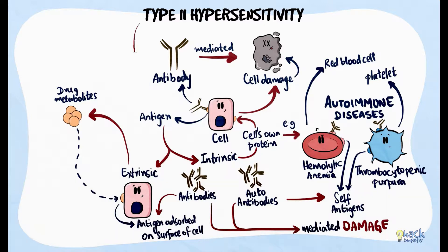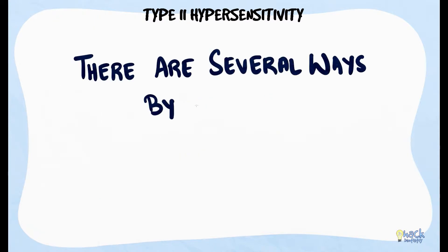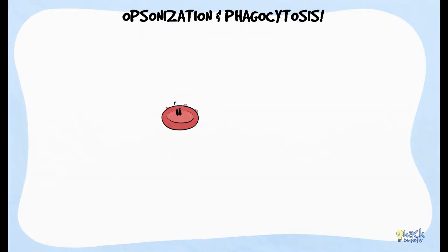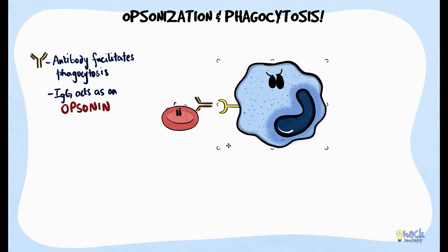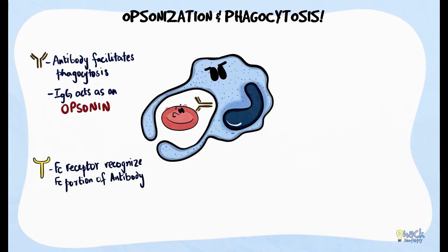Antibodies usually mediating type 2 hypersensitivity reactions are IgG antibodies and rarely IgM antibodies. There are several ways by which antibodies mediate cell damage. One common way is by facilitating phagocytosis. IgG antibodies, after attaching to the antigen, act as opsonins, facilitating phagocytosis of the cell. Phagocytes such as macrophages possess receptors called FC receptors, which recognize the FC portion of the IgG antibody, thus helping macrophages engulf the entire cell.